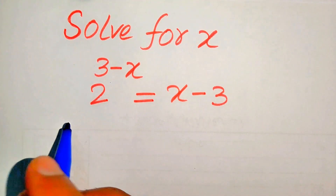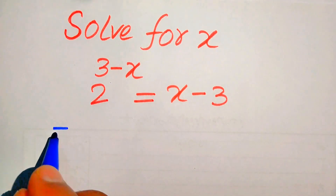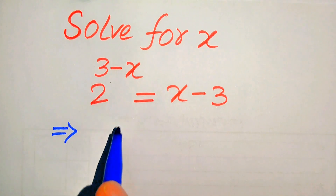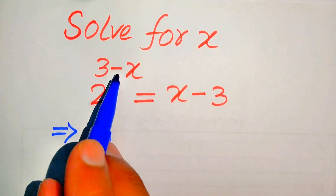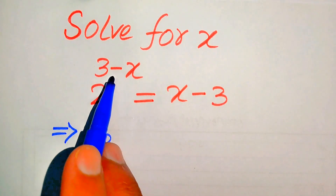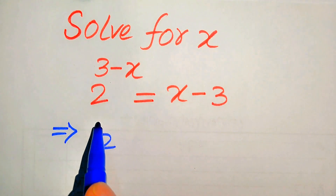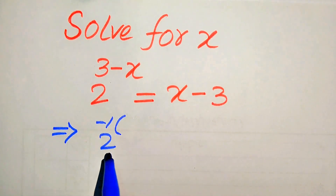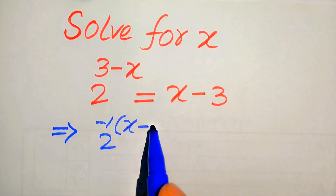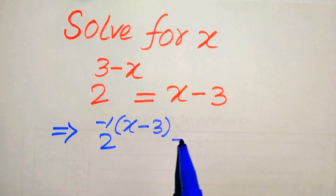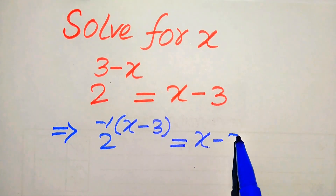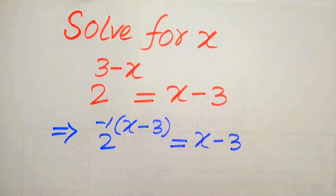First, we need to rewrite the left-hand side. For this, we factor out the minus sign from the exponent. When we take the minus sign from here, it will be written as 2 to the power of minus 1 times (x minus 3), and this equals x minus 3 on the right-hand side.